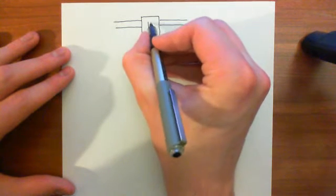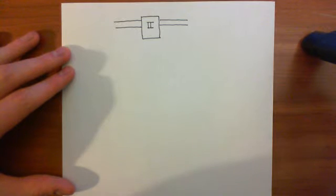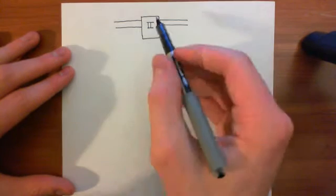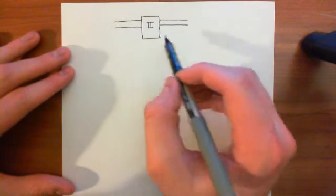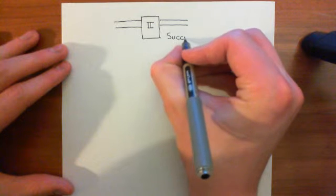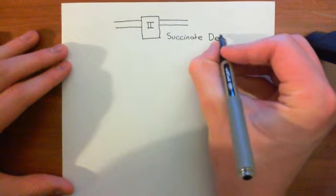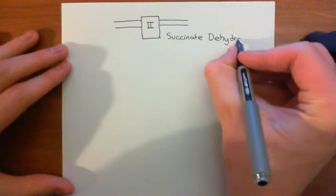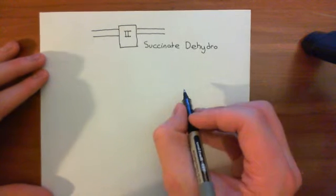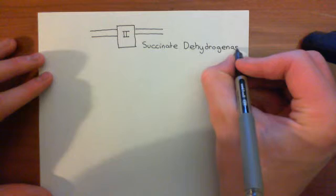Complex 2 also has another name. It's actually extremely important in the Krebs cycle, and we've already seen it. It's the only enzyme in the Krebs cycle that is bound to the inner membrane of the mitochondria - more than bound, it's actually implanted into the membrane. Its other name is succinate dehydrogenase. It's the reaction which, within the Krebs cycle, catalyzes the conversion of succinic acid into fumaric acid, or fumarate.